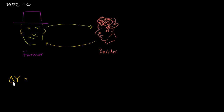GDP, or Y, could be viewed as expenditure or as income, depending on how you think about things. So instead of saying this guy is going to spend $1,000, let's call his incremental change in expenditure delta Y0. Delta just means change in, and Y we could view as aggregate expenditure. I'm putting this little 0 subscript here because this is our first iteration.